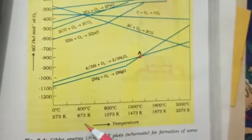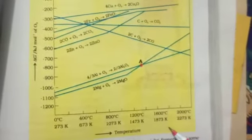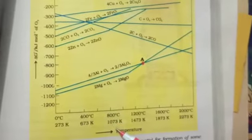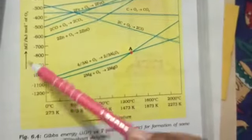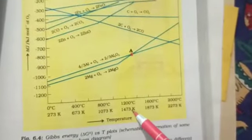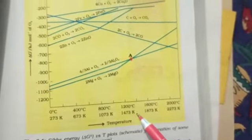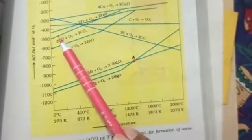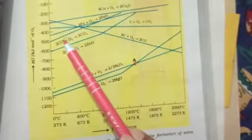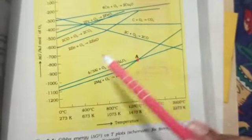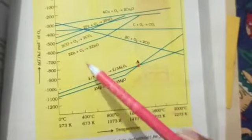Here you can see the temperature is in degrees Celsius and here in Kelvin. This is a plot of delta G versus T. Here you can see that every line is almost a straight line.